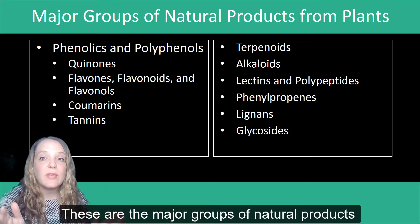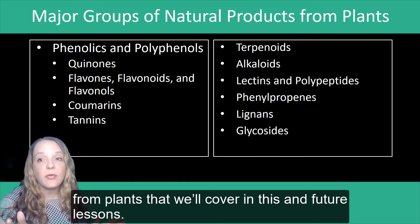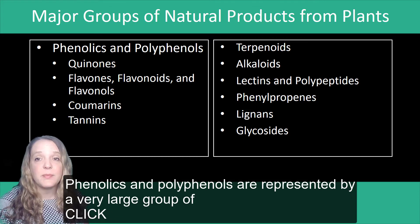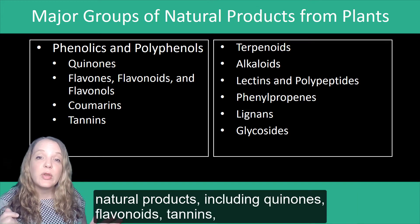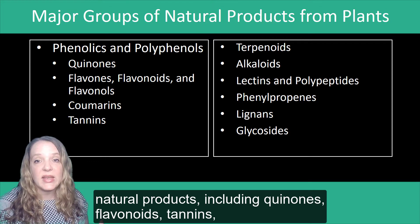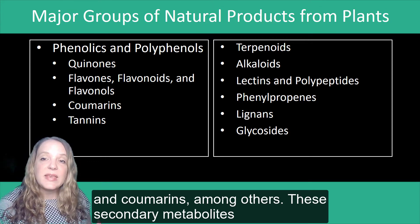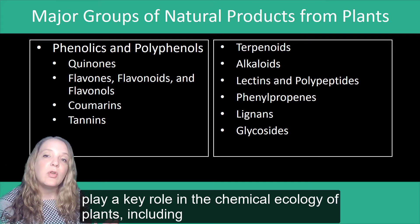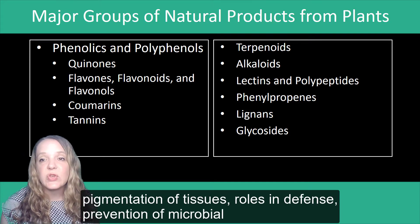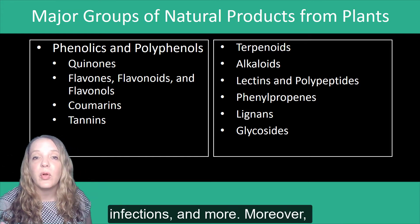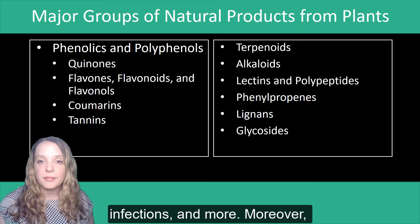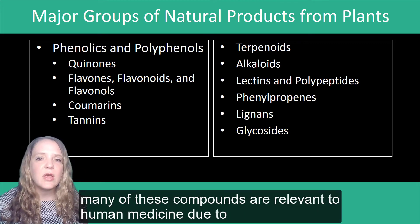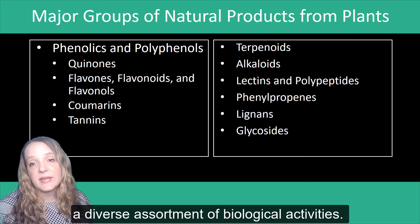These are the major groups of natural products from plants that we'll cover in this and future lessons. Phenolics and polyphenols are represented by a very large group of natural products, including quinones, flavonoids, tannins, and coumarins, among others. These secondary metabolites play a key role in the chemical ecology of plants, including pigmentation of tissues, roles in defense, prevention of microbial infections, and more. Moreover, many of these compounds are relevant to human medicine due to a diverse assortment of biological activities.